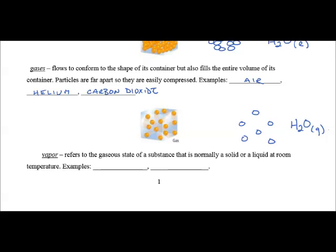It refers to the gaseous state of a substance that's normally a solid or liquid at room temperature. So water in the gas phase is called water vapor, because it's normally a liquid. Bromine is normally a liquid. So if it's heated up to form a vapor, we call it bromine vapor.